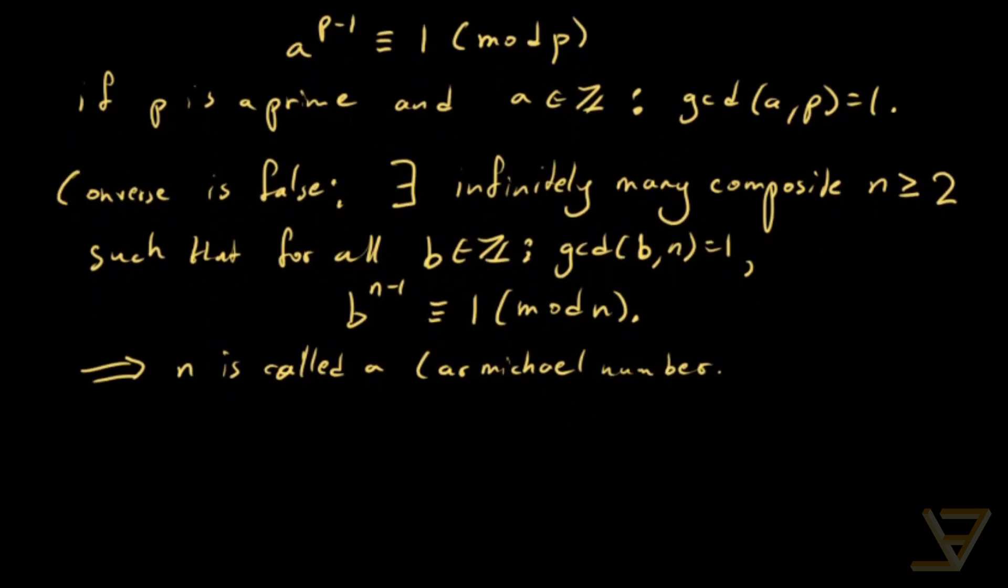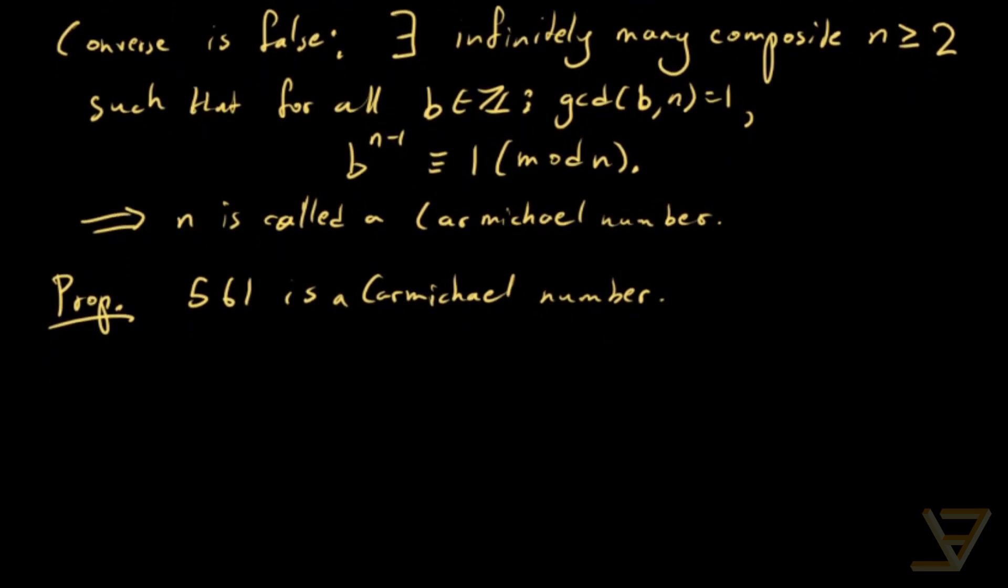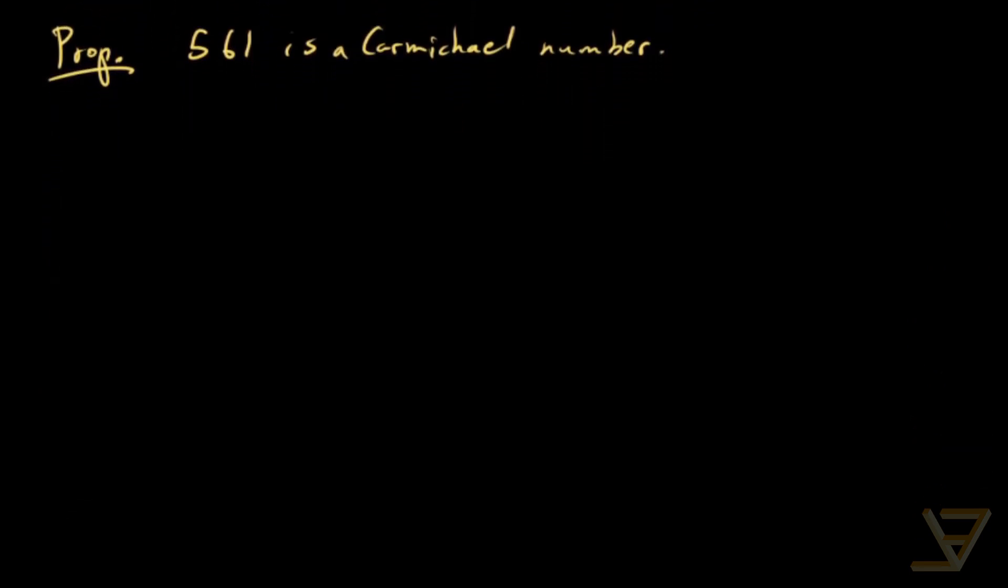What we'll be occupied in proving here is the proposition that 561 is Carmichael. So first of all, let's observe the prime factorization of 561. It's equal to 3 × 11 × 17.